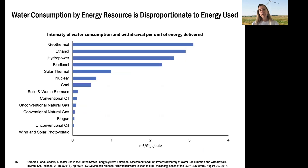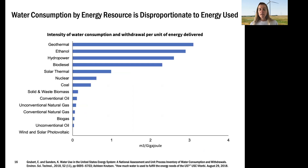Water consumption can be very different depending on the resource, which matters depending on local water availability. Some resources like geothermal don't require potable or drinking water, so there is variability in terms of the quality of water required.